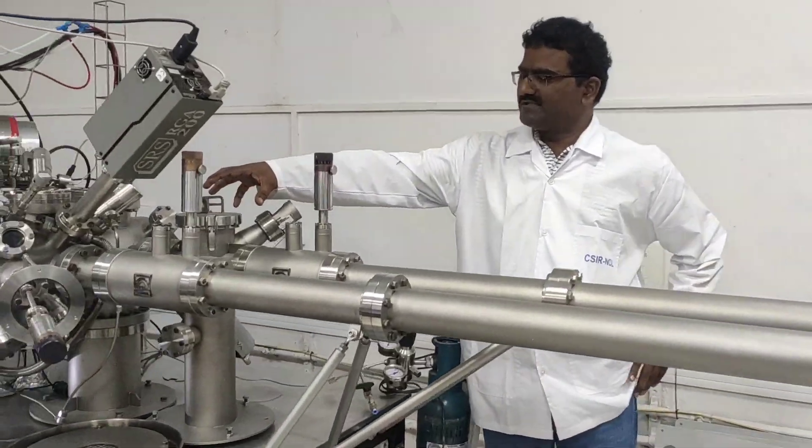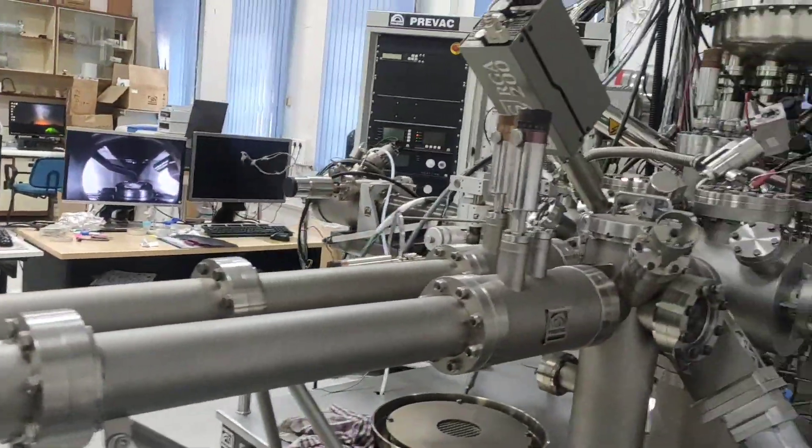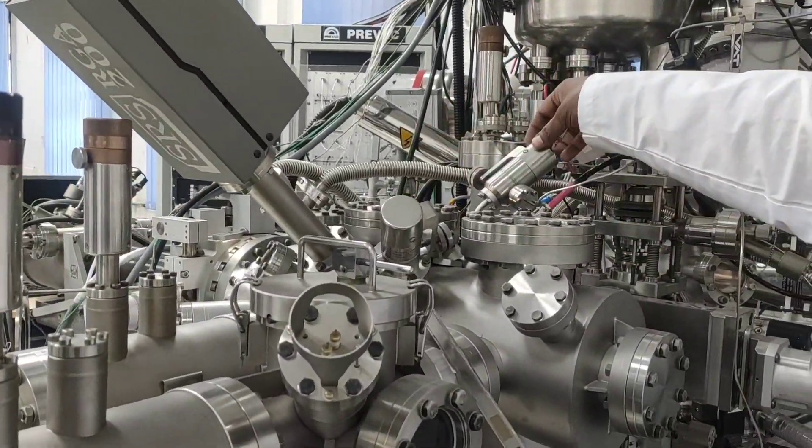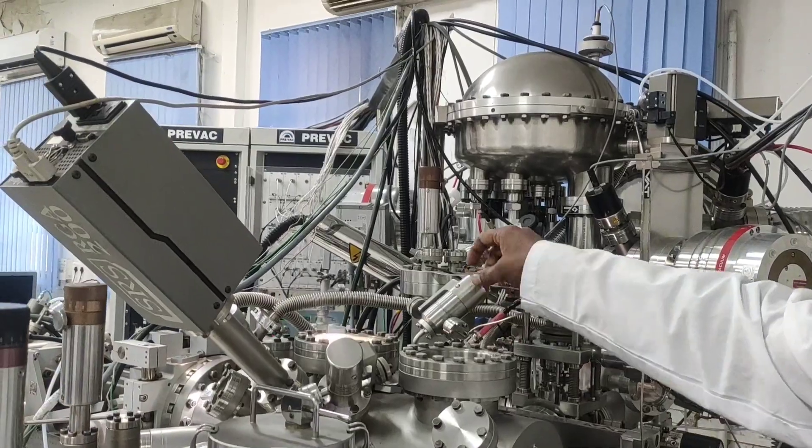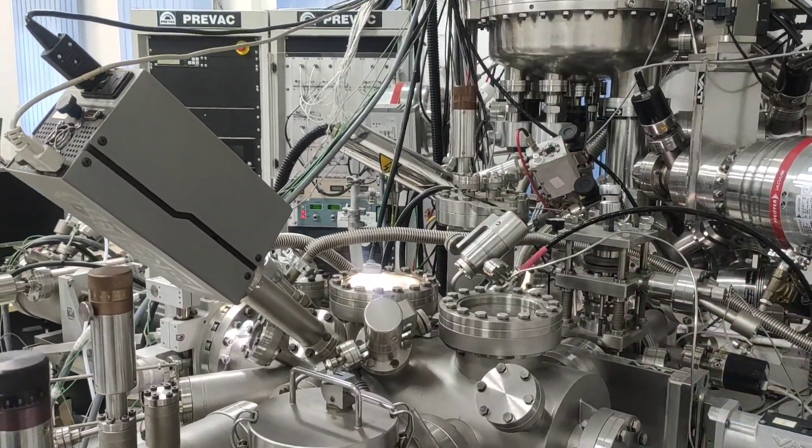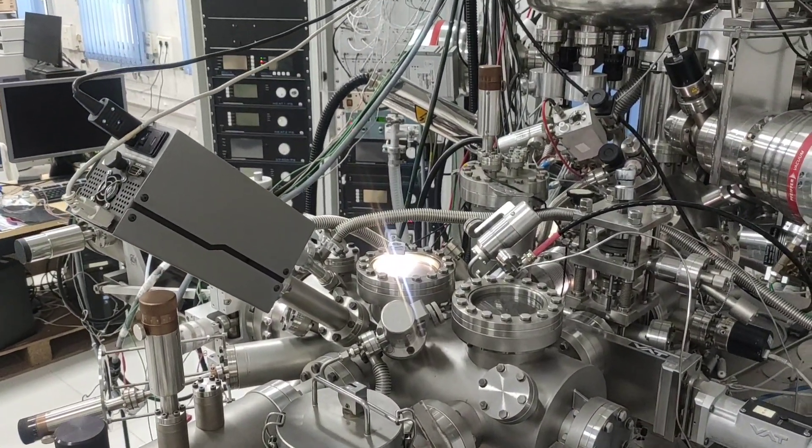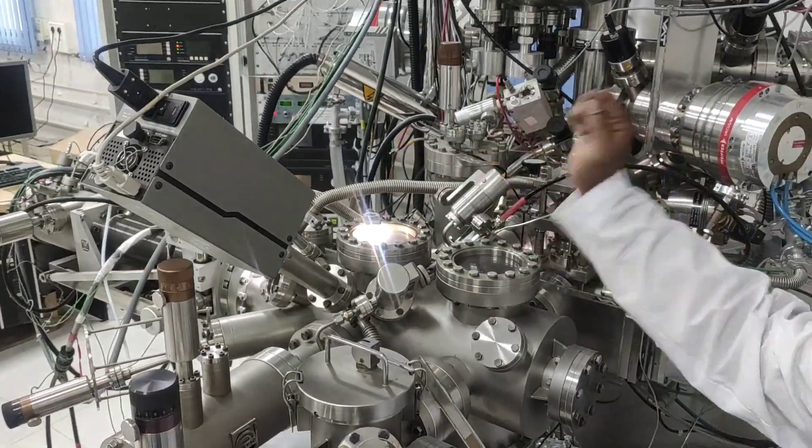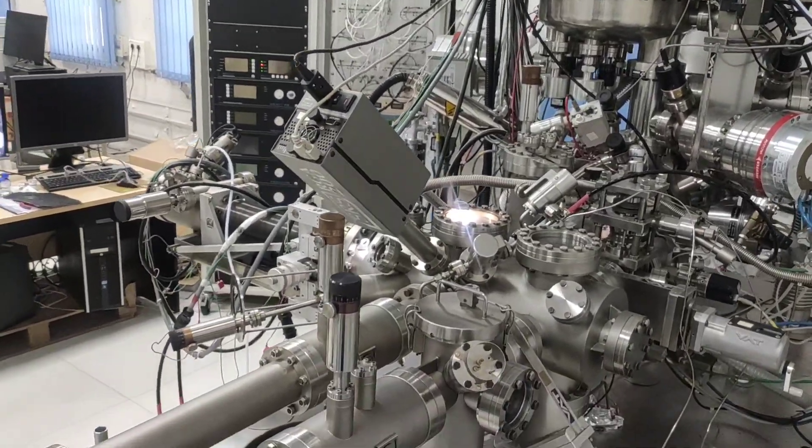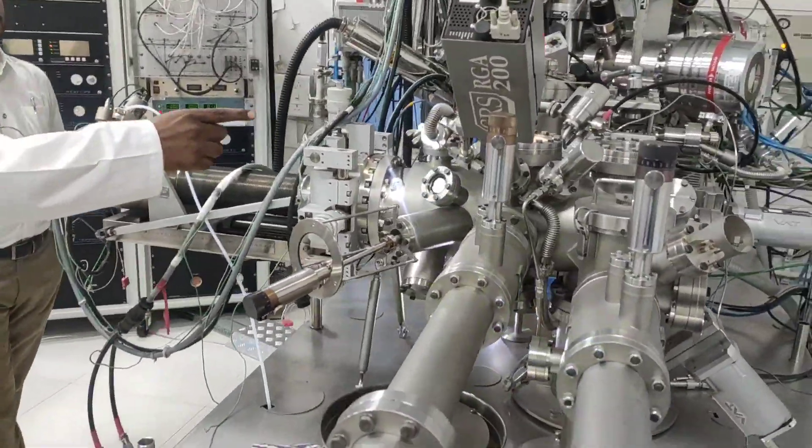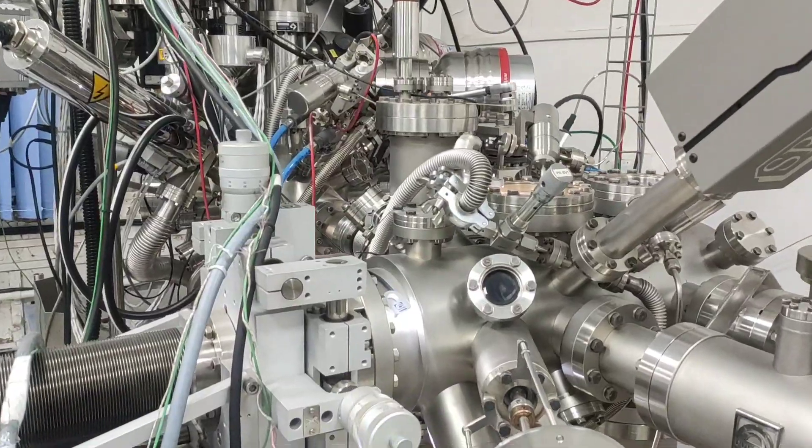Here you can put the sample and then the sample is transferred through this linear transfer arm to this chamber. Here we have a sputtering gun. We can sputter the sample using argon ions because this sputtering gun generates high speed argon ions that bombard on the surface. Some of the atoms from the surface get removed and this will clean the surface of the sample. Then later on we can anneal the sample in the same chamber. For cleaning the surface, we need to anneal and sputter the sample several times.